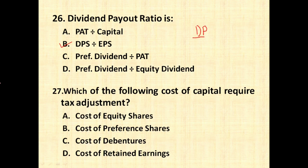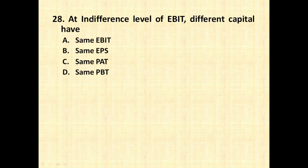The second question is: which of the following costs requires tax adjustment? This question has been repeated 2-3 times. Just remember: tax adjustment is usually given only in the cost of debentures, that is KD or KI. So tax benefits are always applicable to the cost of debentures.